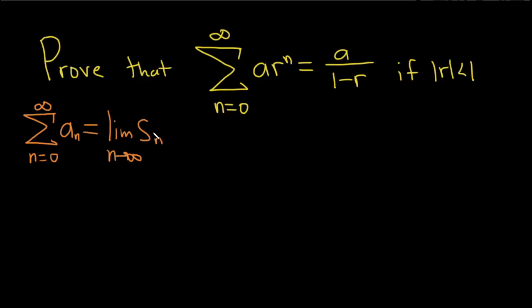So if you take the limit as n goes to infinity of the nth partial sum and the limit exists, then we say the series converges and it's equal to that limit. If the limit does not exist, then we say the series diverges.